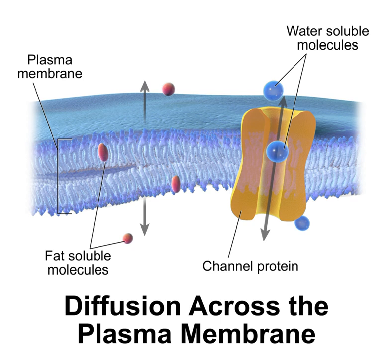4. Exocytosis. Just as material can be brought into the cell by invagination and formation of a vesicle, the membrane of a vesicle can be fused with the plasma membrane, extruding its contents to the surrounding medium. Exocytosis occurs in various cells to remove undigested residues from endocytosis, to secrete substances such as hormones and enzymes, and to transport a substance completely across a cellular barrier. The secretory vesicle from the Golgi apparatus is moved by the cytoskeleton to the cell surface, where the vesicle membrane fuses with the plasma membrane and discharges its contents outside the cell.